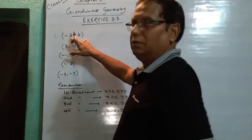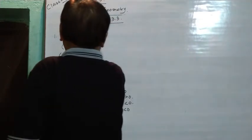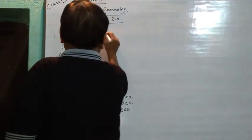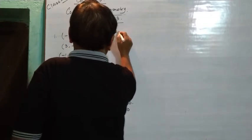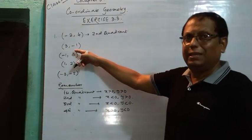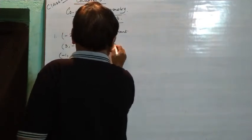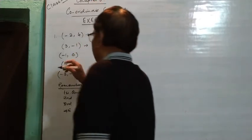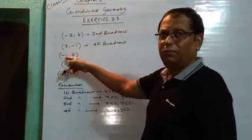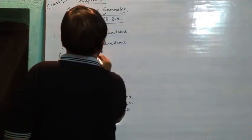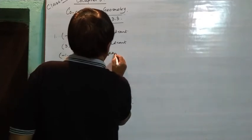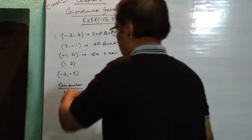So this one — X negative, Y positive — it will be in the second quadrant. X positive, Y negative — this will be in the fourth quadrant. X positive, Y positive — first quadrant.